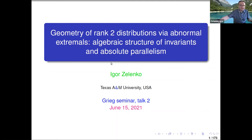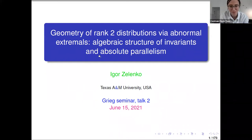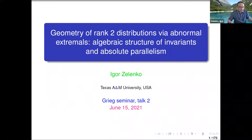Thank you for giving me the opportunity to give this lecture. This is a continuation, the second talk about geometry of rank two distributions via abnormal extremals. Last time I gave a construction of generalized Wilczynski invariants, which are rational functions on a sub-bundle of the cotangent bundle. Today I will speak first about general algorithms to calculate these invariants.